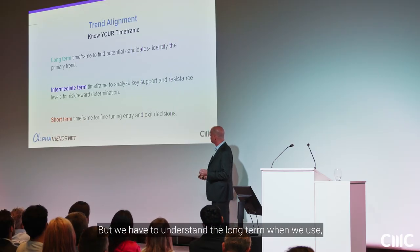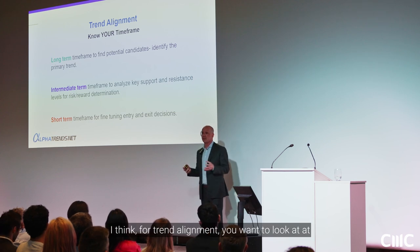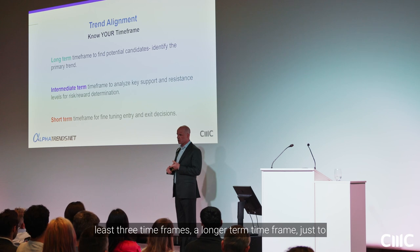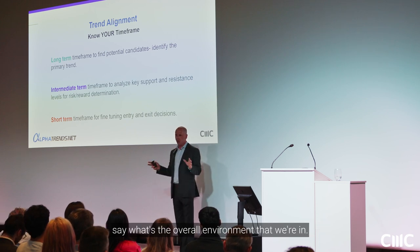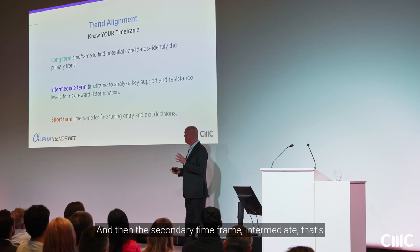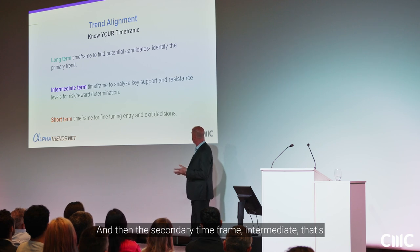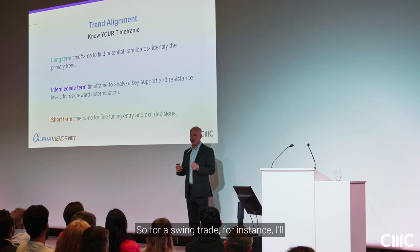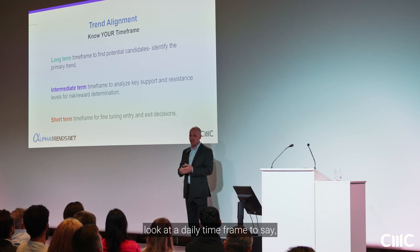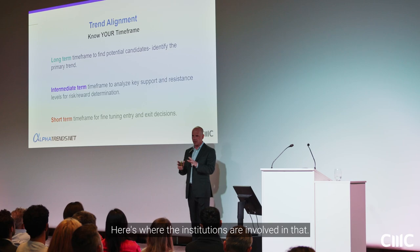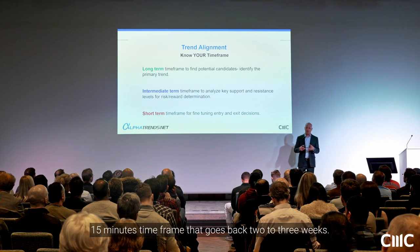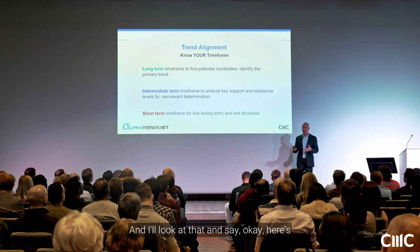For trend alignment, you want to look at at least three timeframes. A longer-term timeframe just to understand the overall environment, then a secondary intermediate timeframe. For swing trades, I'll look at a daily timeframe to see what the stock is doing overall and where institutions are involved, then I'll look at a 30-minute or 15-minute timeframe going back two to three weeks.